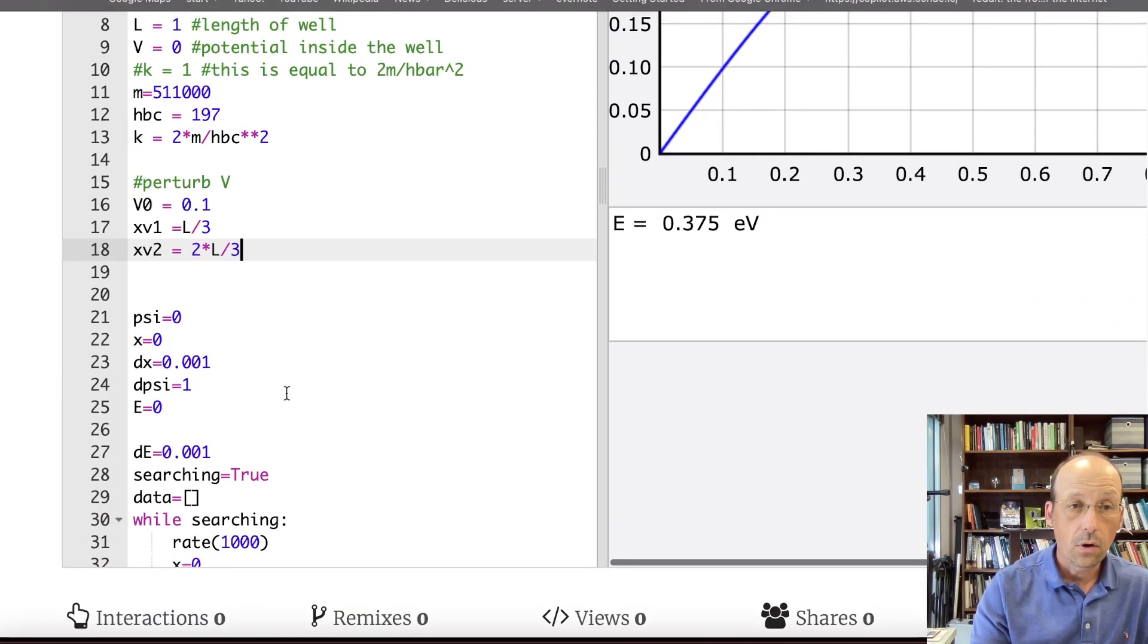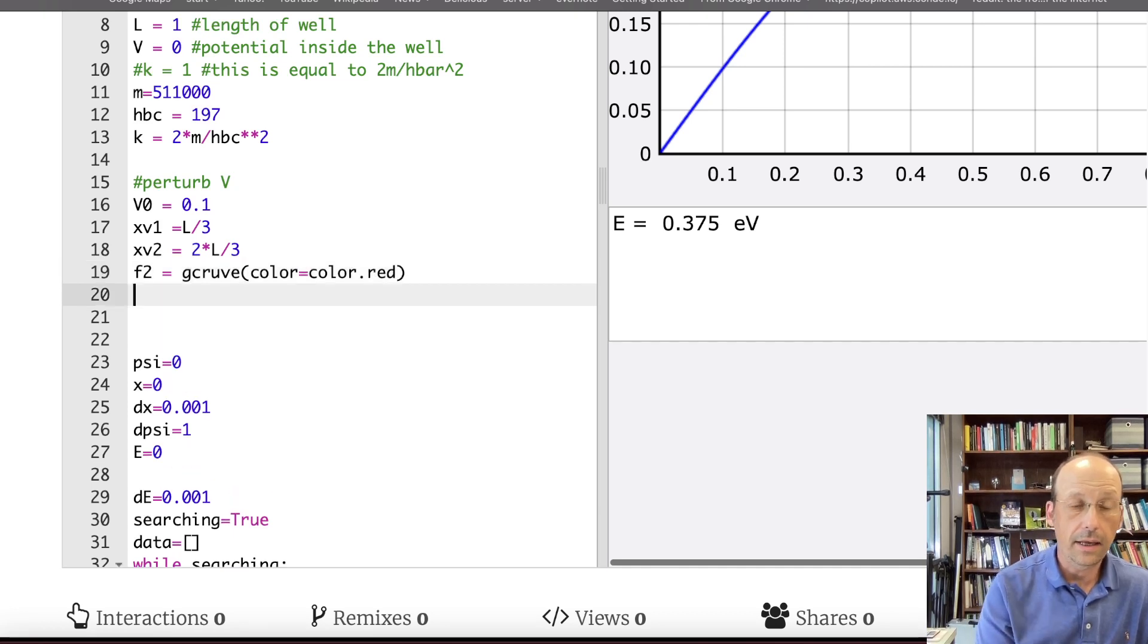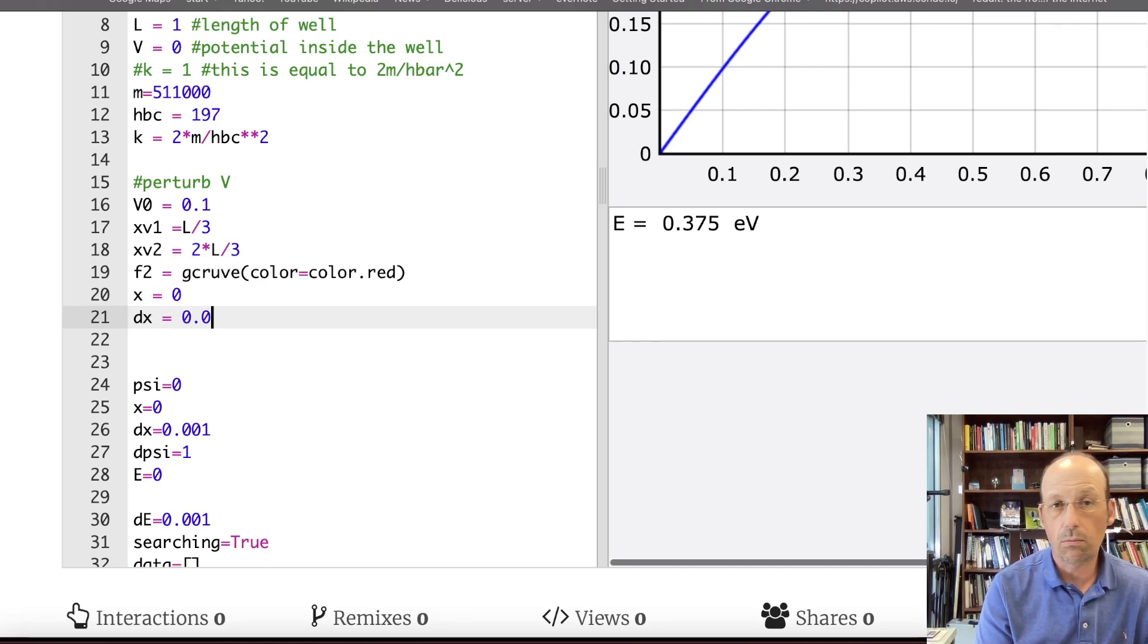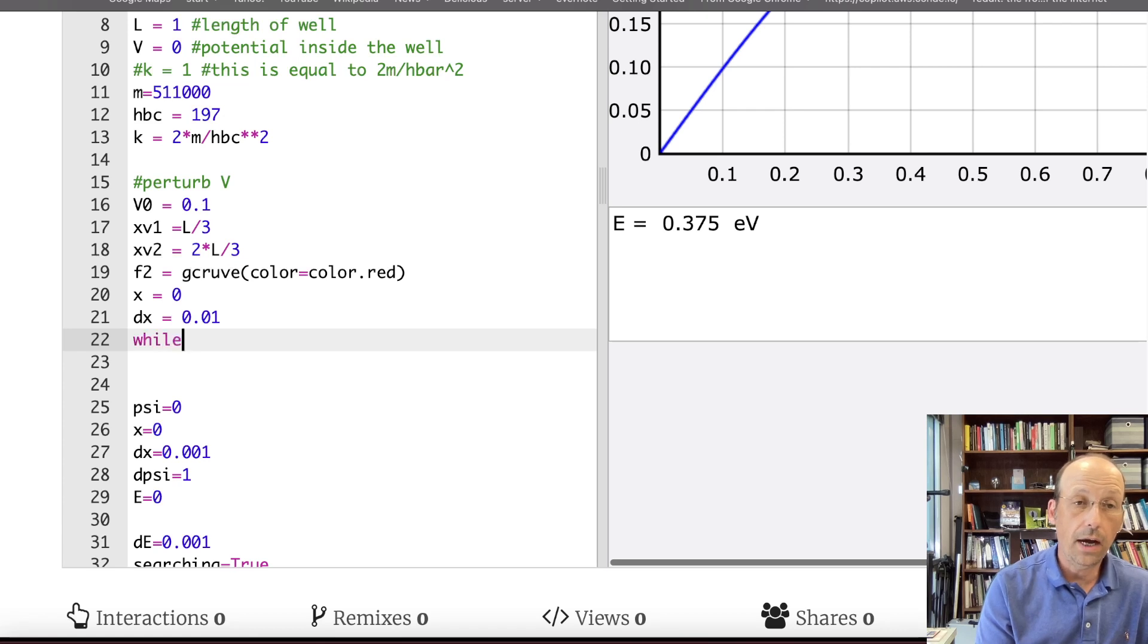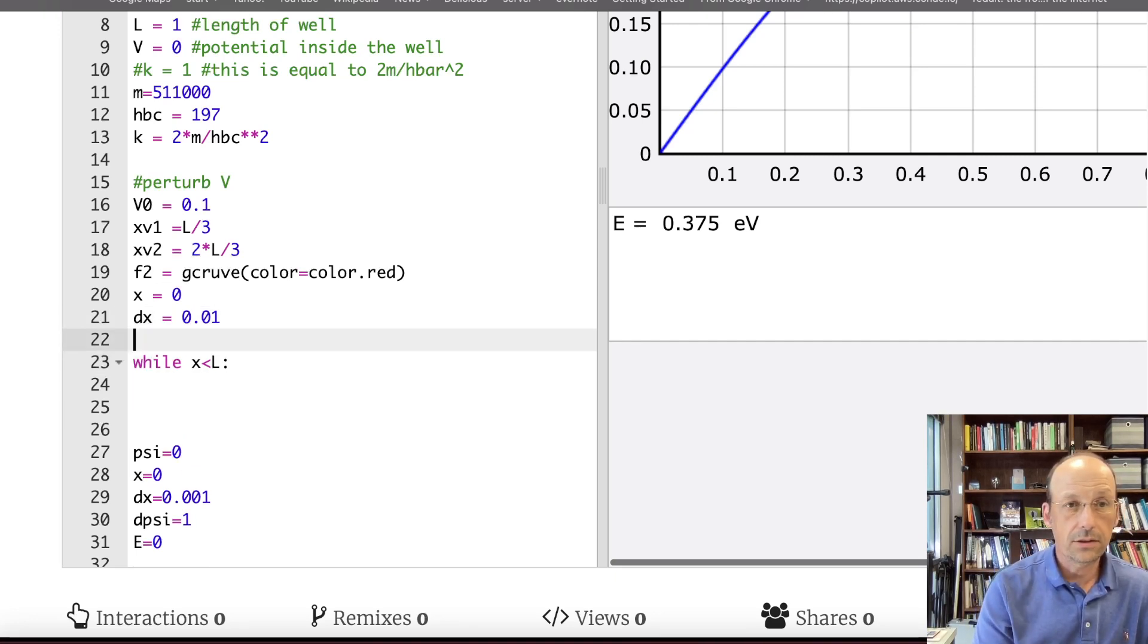So that's the parameters for my potential and I can change that. Down here, oh, let's plot it. F2 equals gcurve. Color equals color.red. And then I will say x equals 0, dx equals 0.01. It doesn't really matter how big it is. And then while x is less than L, do the following. Calculate the potential.